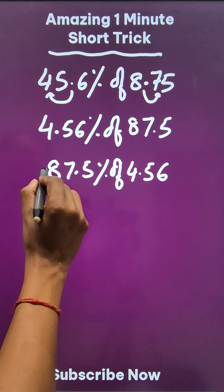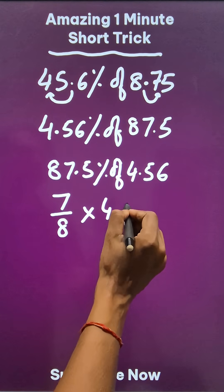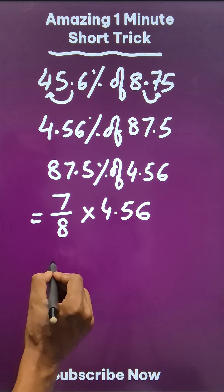I know that 87.5% is actually 7/8 of a number, and 7/8 of 4.56 is much easier to find.